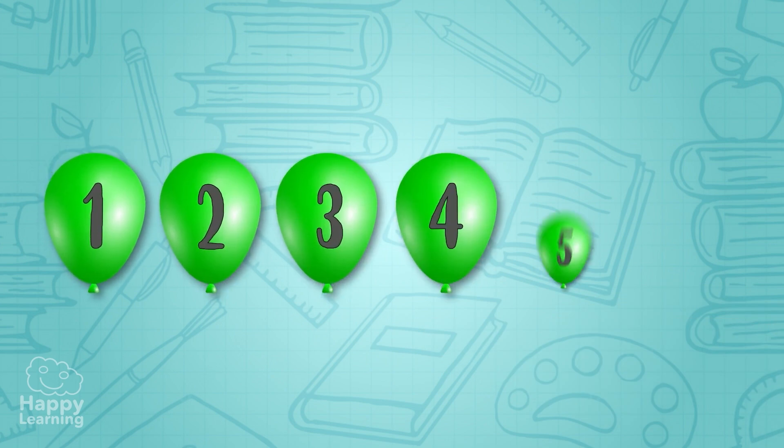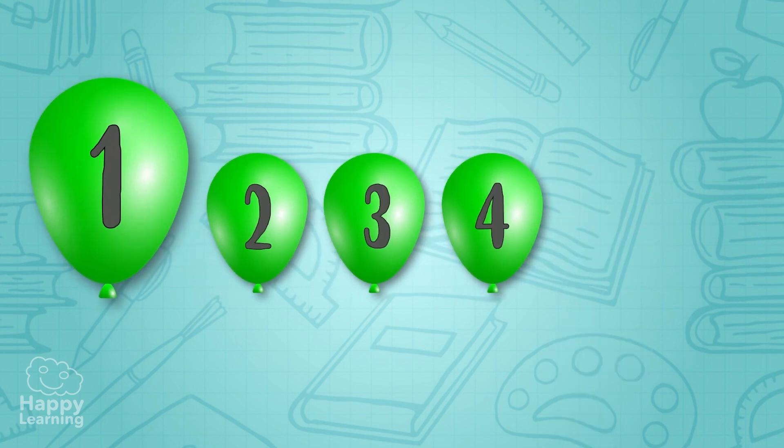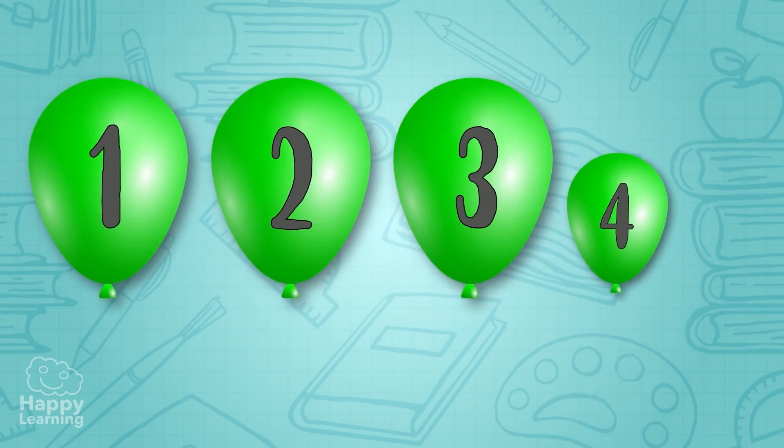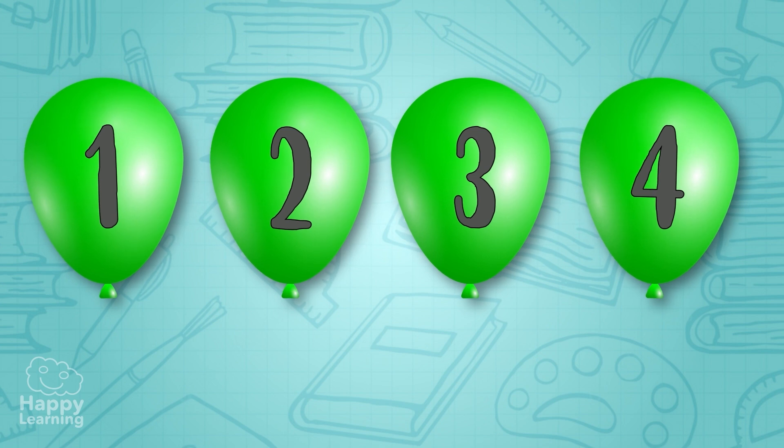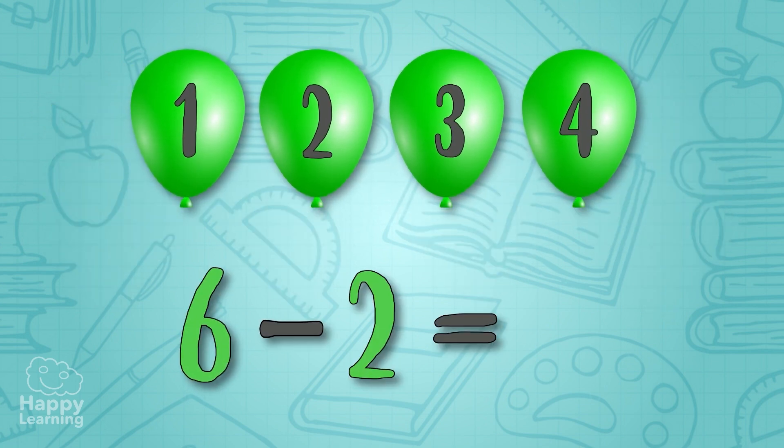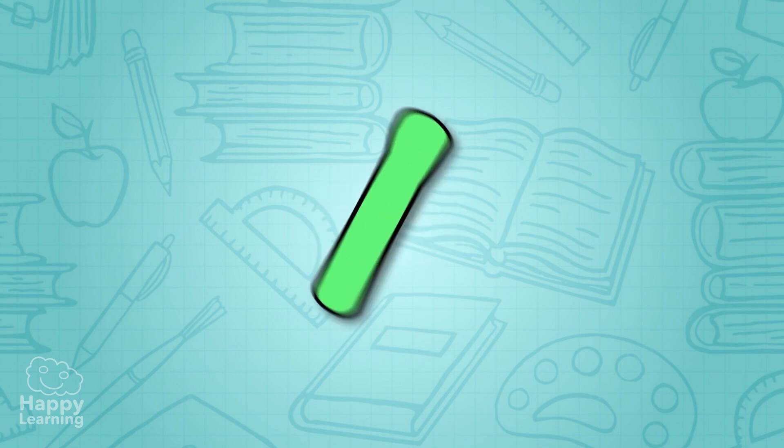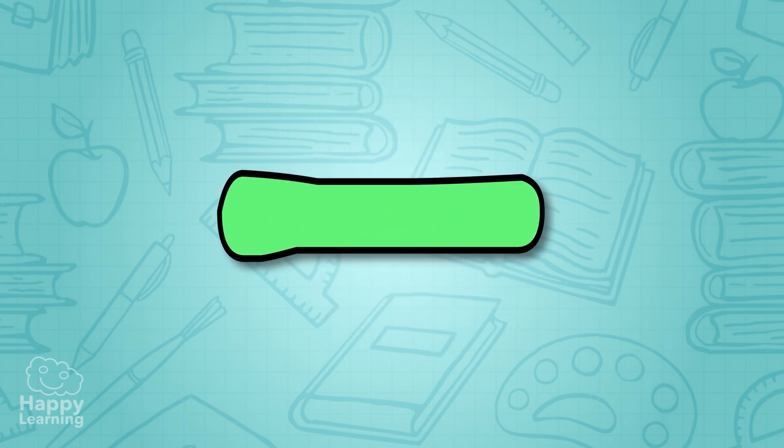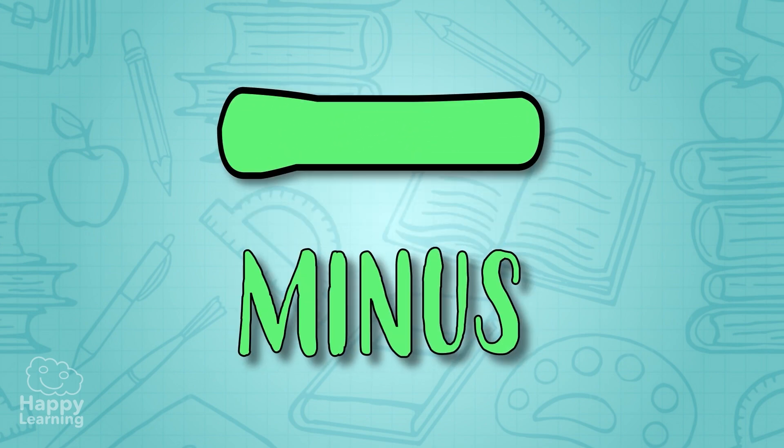For example, if we have six balloons but two of them burst, we've got one, two, three, and four balloons left. Six minus two equals four. A subtraction is represented by this sign which is called minus.